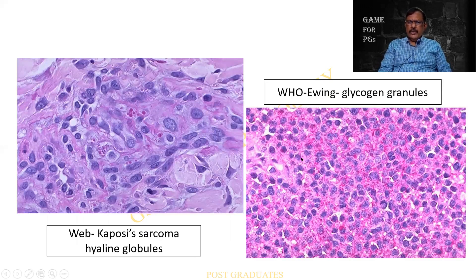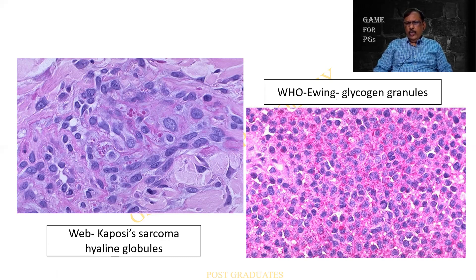Some of the applications of the PAS stain — here I am finding globules in the cytoplasm in a case of Kaposi's sarcoma. I hope you are able to appreciate the magenta coloured globules in the cytoplasm. And sometimes you will have difficulty in diagnosing a small round cell tumour — do a PAS, and if it is granular and positive, it can turn out to be Ewing's. Correlate with clinical and radiological pictures.